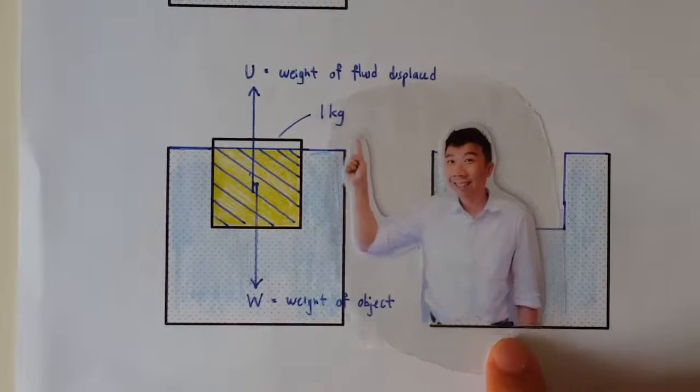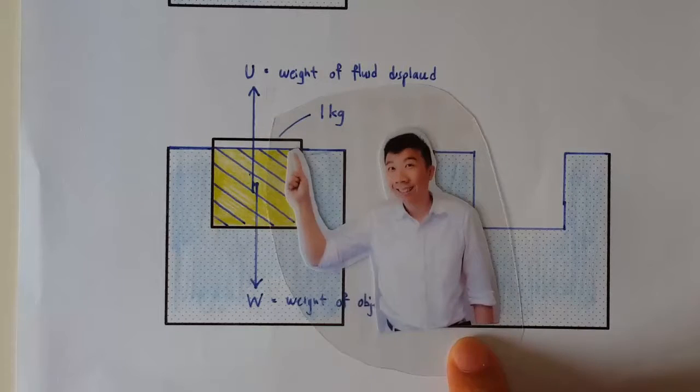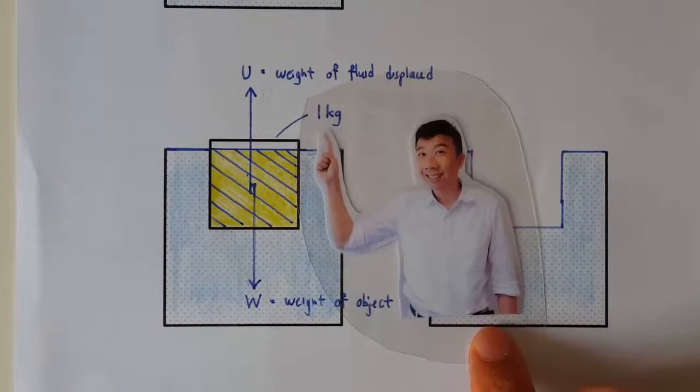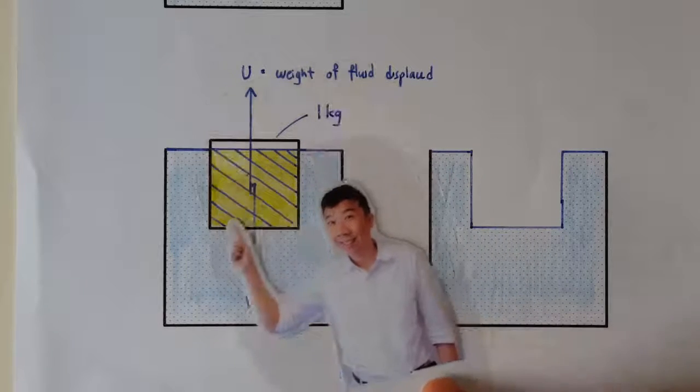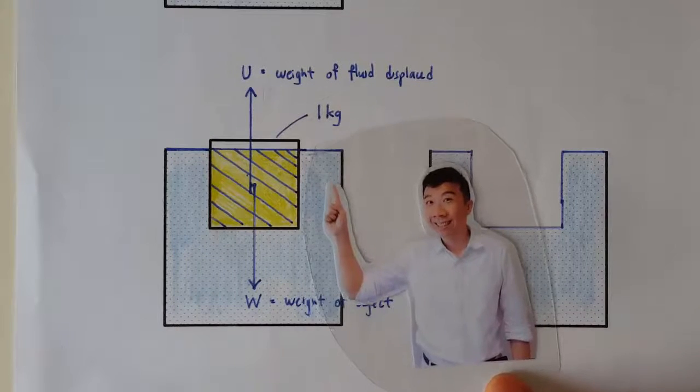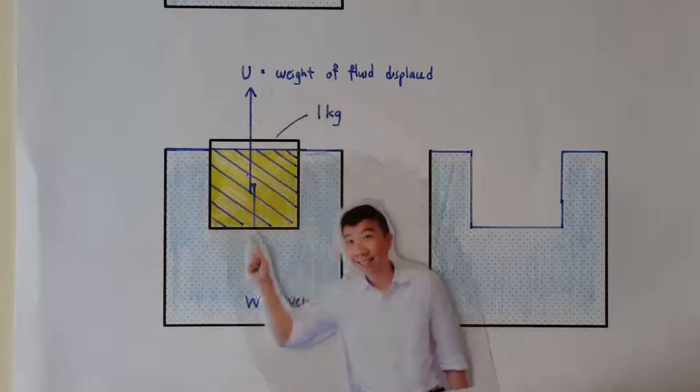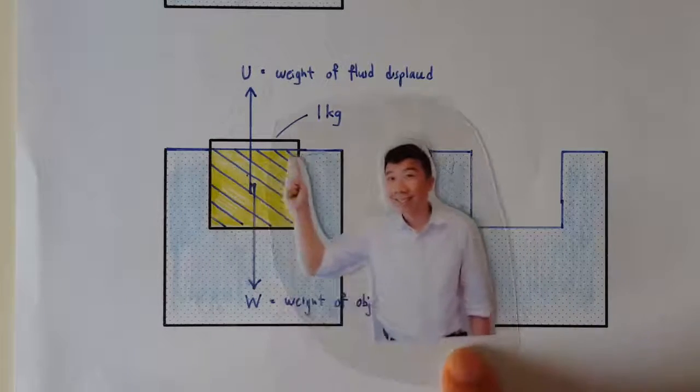For discussion's sake, let's say the ice cube is 1 kilogram. So how much water does this ice cube displace in order for it to stay afloat? So I'm asking what is the mass of this displaced water here?